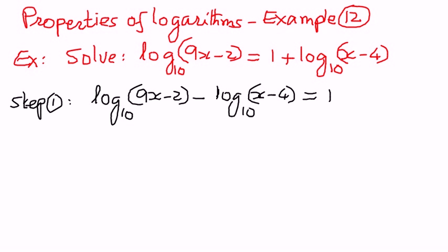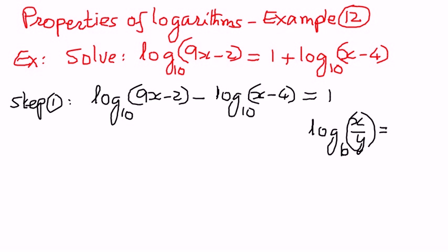We know the quotient rule. Since we have a negative sign between these two logarithm terms, we can write it as a single logarithm. The quotient rule tells us that if we have log(x/y) to the base b, we can write this as log x to the base b minus log y to the base b.